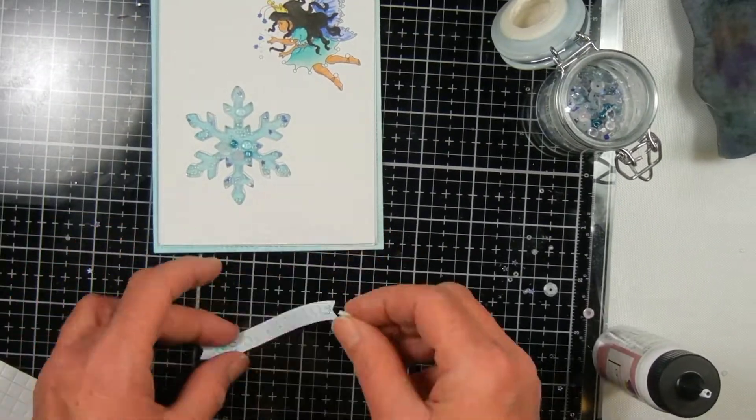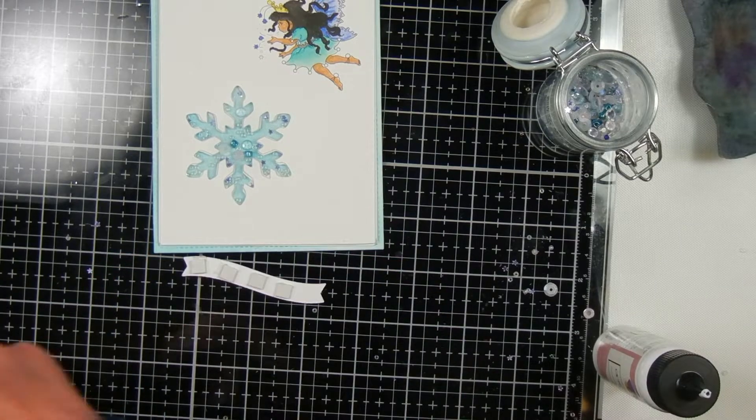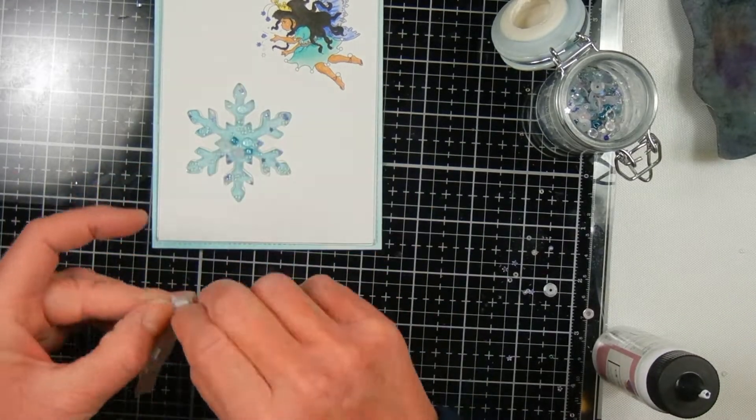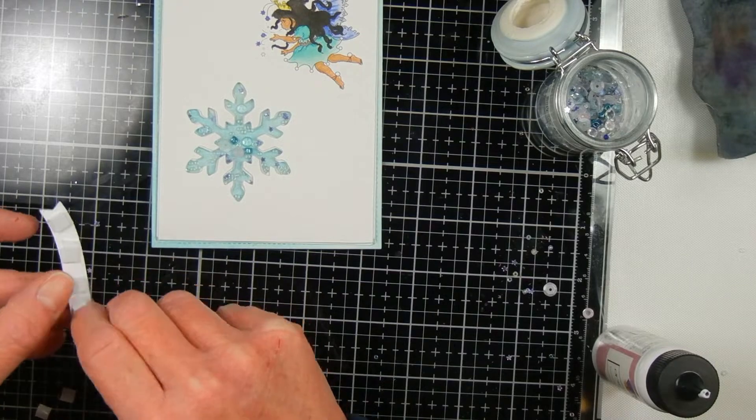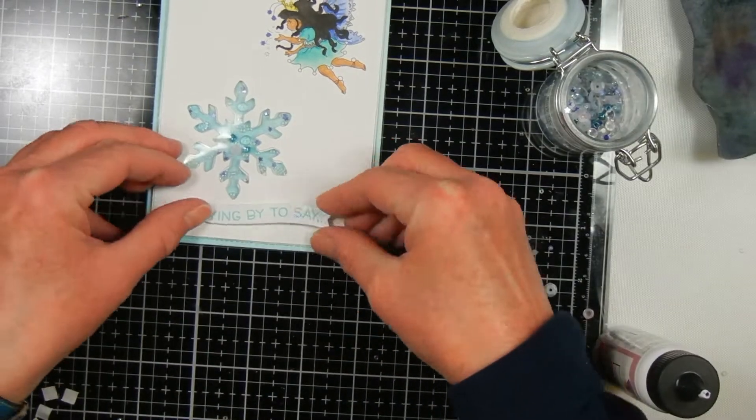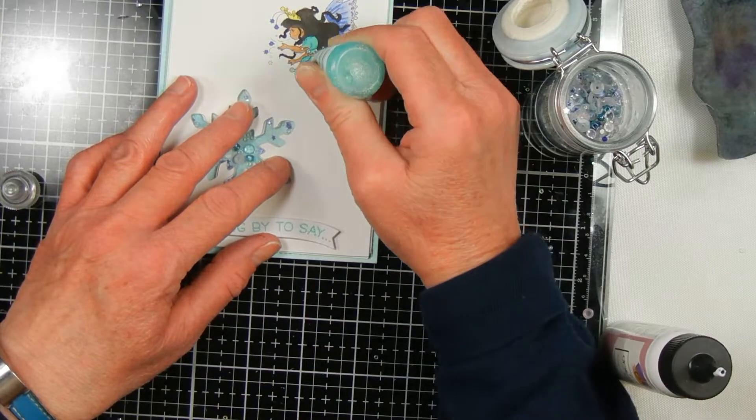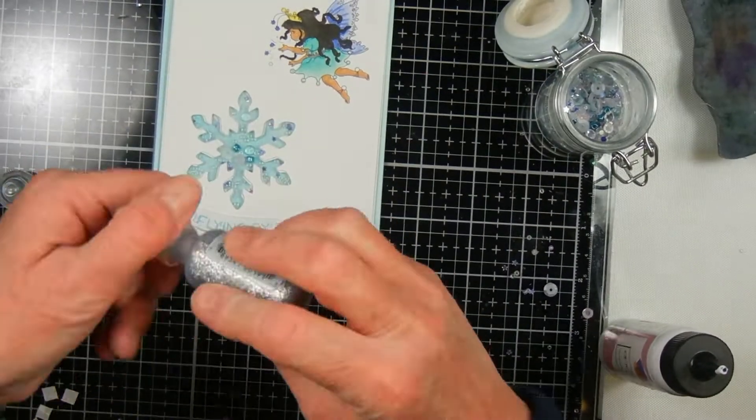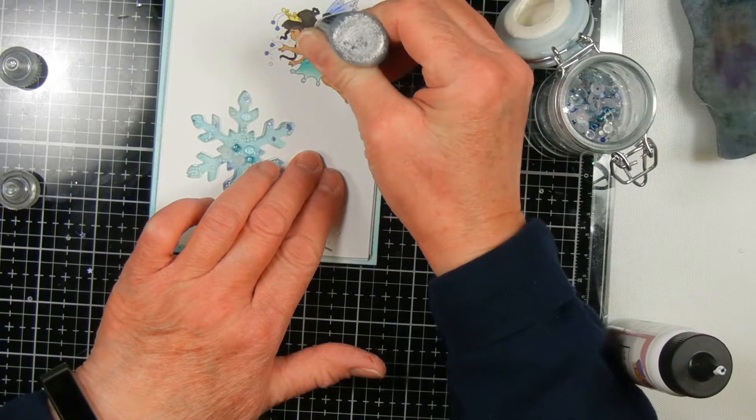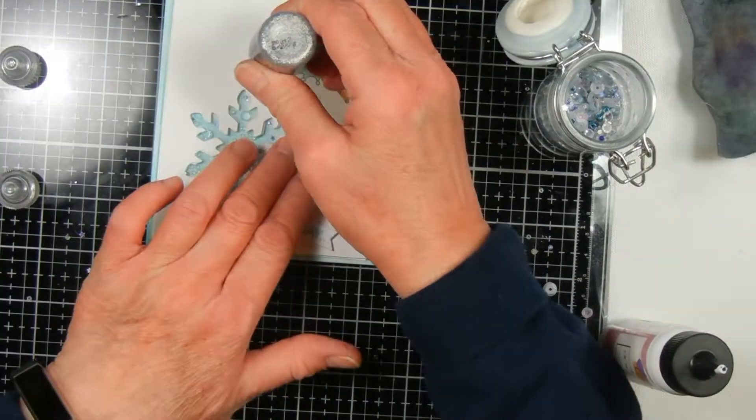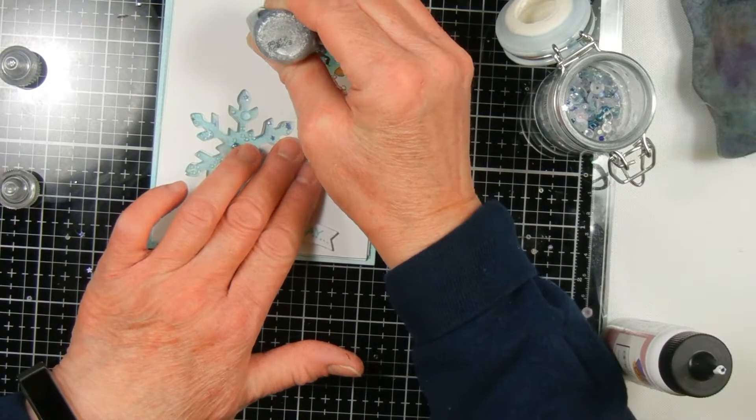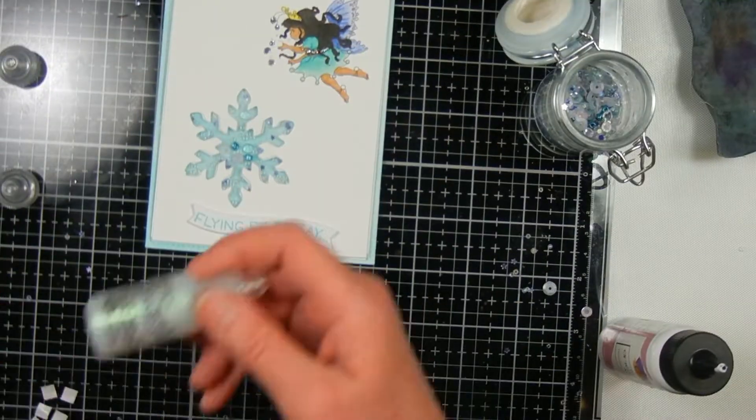I'm using some foam squares to pop up my sentiment on the card, and then I use some stickles to decorate the fairy. I use silver stickles for her belt and stars, cool mint stickles to go around what looks like pom-poms around the bottom of her dress, and crystal stickles on the little pom-poms on her feet.